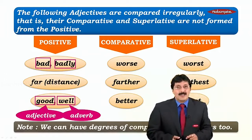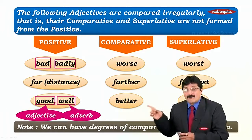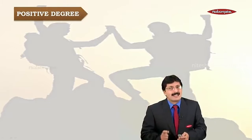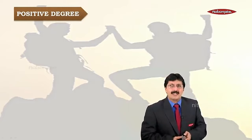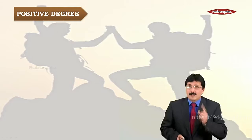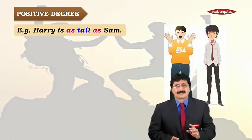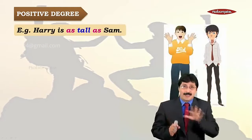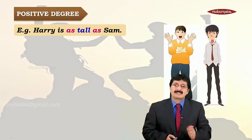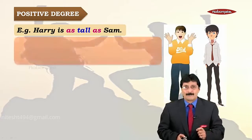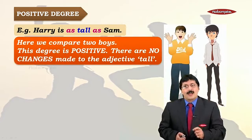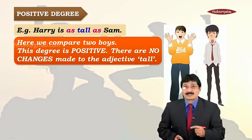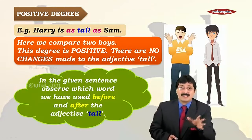So moving on, let's have a look at the first degree — the positive degree — which is the adjective as it is. 'Harry is as tall as Sam.' Equal, equal, equal — fantastic! This is the positive degree. Do you notice two things? One: there is no change to the adjective 'tall' — it doesn't become ER or more.